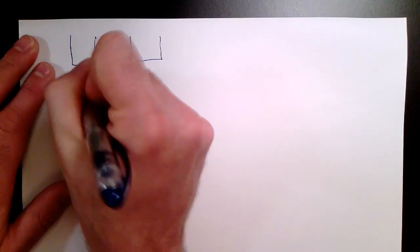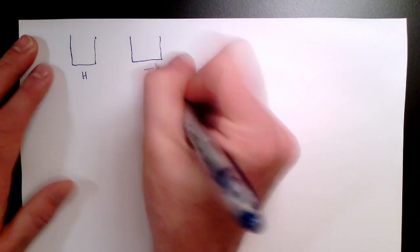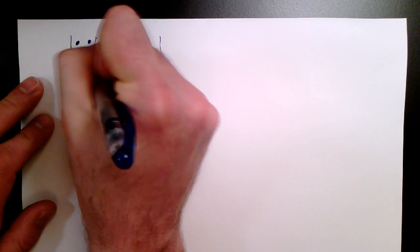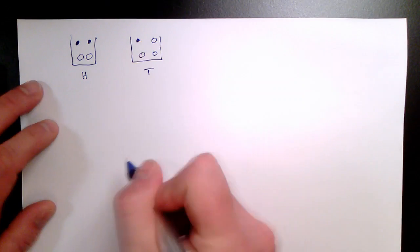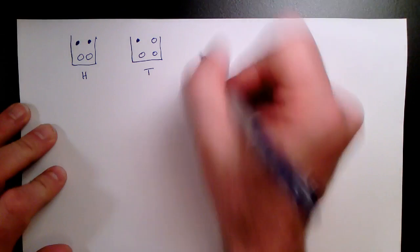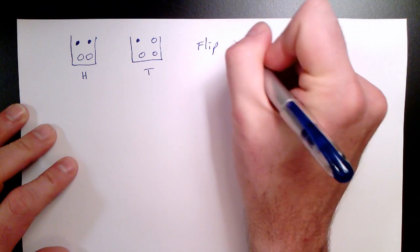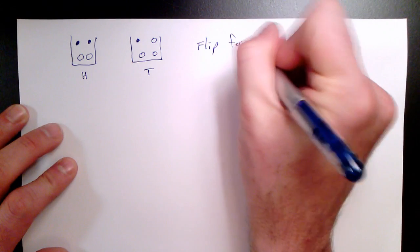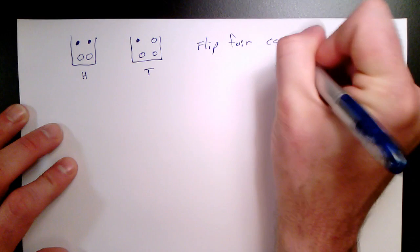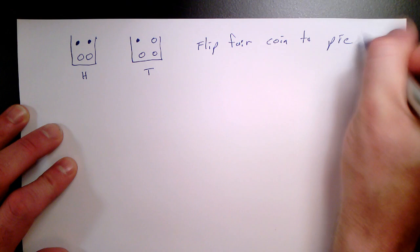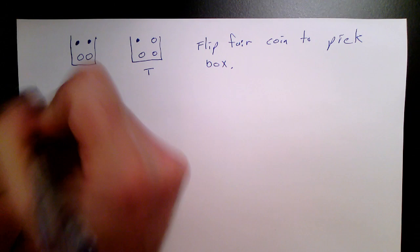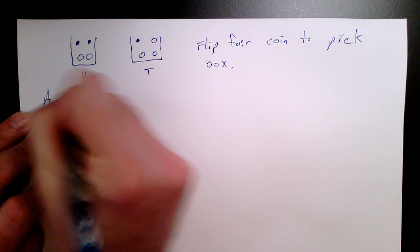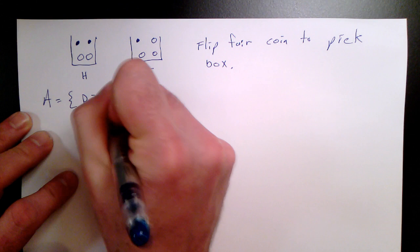Let's do an example. Say we have two boxes: one labeled H for heads and one labeled T for tails. We flip a fair coin and pick a ball from the box according to whether we get a head or a tail — heads means we draw from the H box, tails means we draw from the T box. The H box has four balls: two black and two white. The T box also has four balls, but only one of them is black. Let A be the event that we pick a black ball.